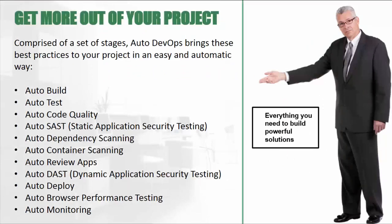The goal for any project is to achieve the highest level of operational efficiency. Auto DevOps brings best practices to your project in an easy and automatic way. The stages include: auto build, auto test, auto code quality, static application security testing, dependencies, containers, review, dynamic application security testing, deployment, browser performance testing, and monitoring. Everything is automated, providing everything needed to build and deliver powerful software applications to customers.